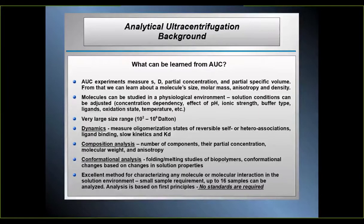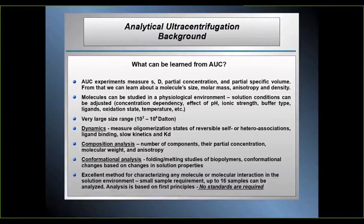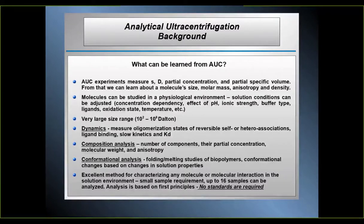What can we learn from analytical ultracentrifugation? In sedimentation velocity experiments, which is the prime type of experiment performed with AUC, you measure the sedimentation and the diffusion coefficient and the partial concentration of an analyte in a solution. If you perform a density matching experiment, you can also access the partial specific volume of the analyte. From all of this information together, we can then learn about a molecule's size, molar mass, anisotropy, and density. AUC really can't tell apart different shapes — all it can tell apart is the globularity or how extended the molecule is, and we call it anisotropy.